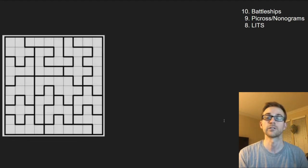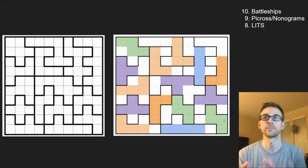Number eight is Lits, which is especially fun for me because it reminds me of Tetris. You're basically using Tetris shapes or tetrominoes and putting them within the regions so that they're all adjacent to one another, but not sharing two regions of the same type of shapes. You can't have two L's next to each other or two S's next to each other.